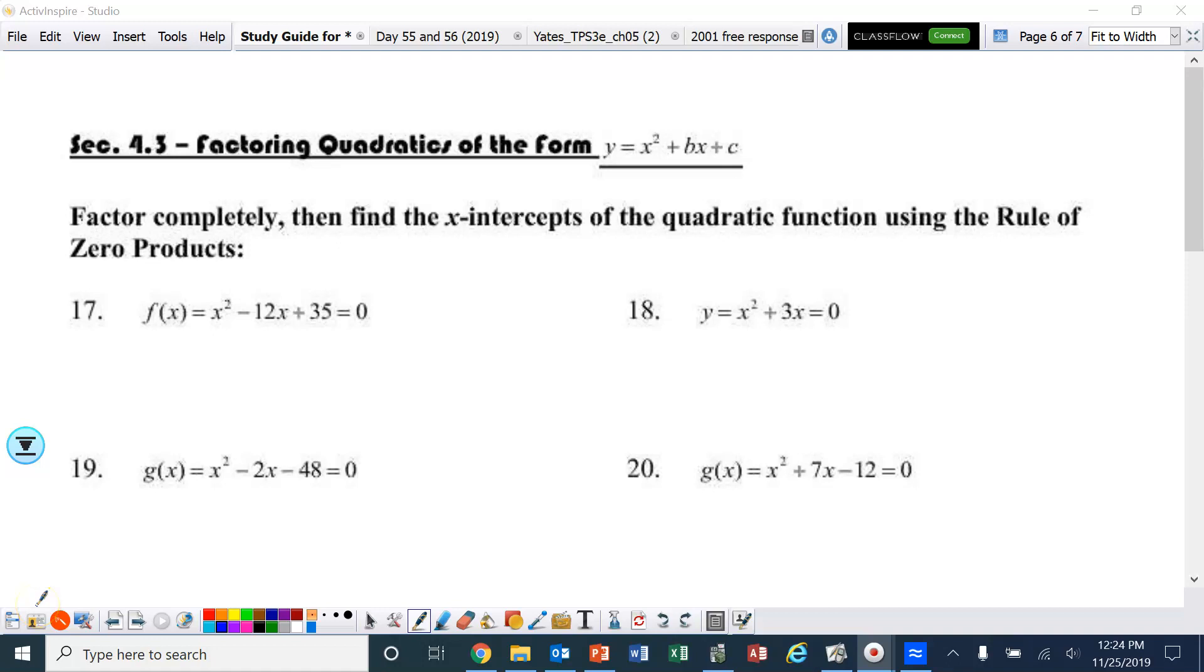All right ladies and gentlemen, section 4.3 of the study guide, factoring quadratics of the form y equals ax squared plus bx plus c. So all of these, the a value in front of the x squared is a one. All right, here we go.